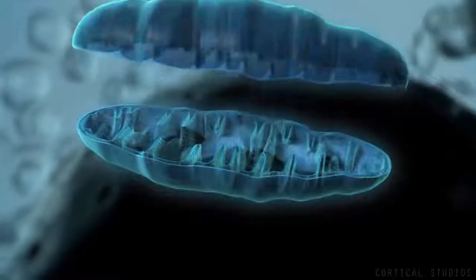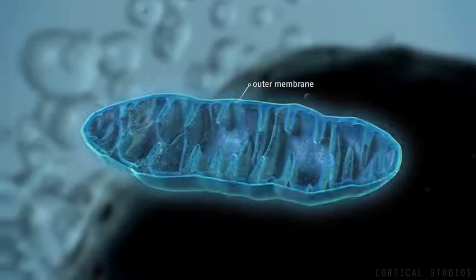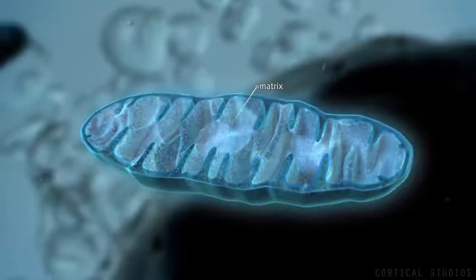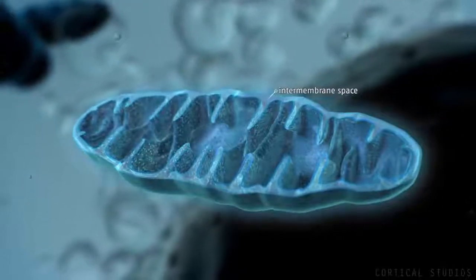Mitochondria consist of two membranes, an outer membrane separating it from the cytosol, and an inner membrane surrounding the so-called matrix. The area between these membranes is called the intermembrane space.